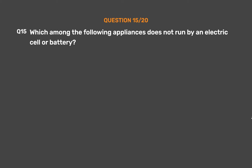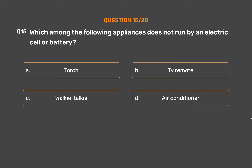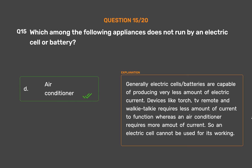Question number 15. Which among the following appliances does not run by an electric cell or battery? Option A: Torch. Option B: TV remote. Option C: Walkie-talkie. Option D: Air conditioner. Generally, electric cells and batteries are capable of producing very little electric current. Devices like torch, TV remote, and walkie-talkie require less current to function, whereas an air conditioner requires more current, so an electric cell cannot be used for its working.